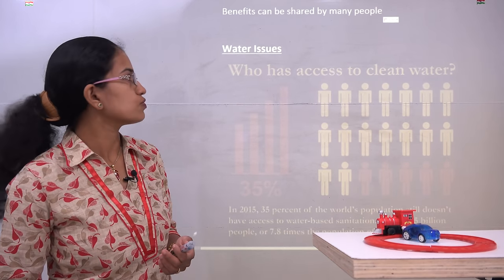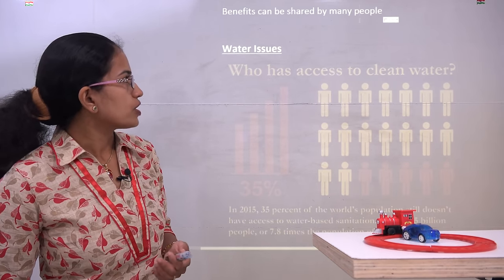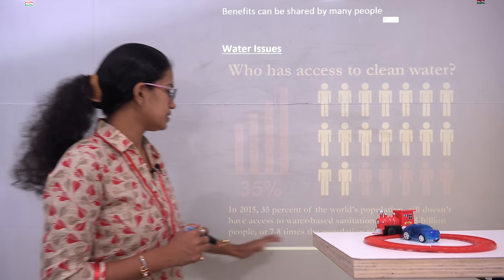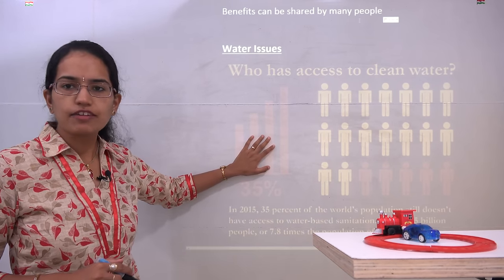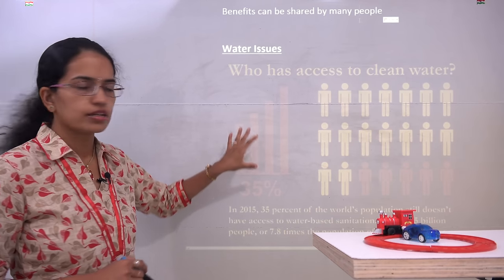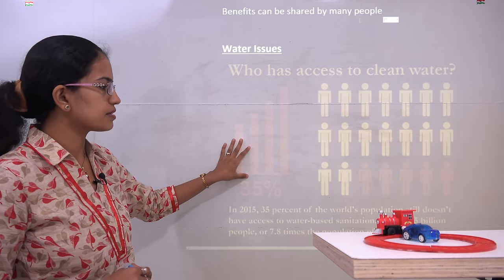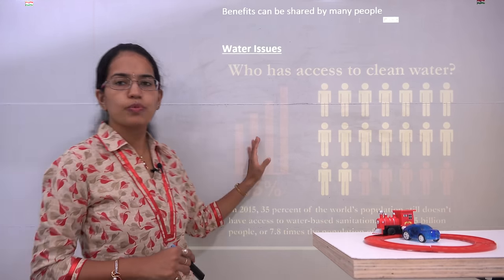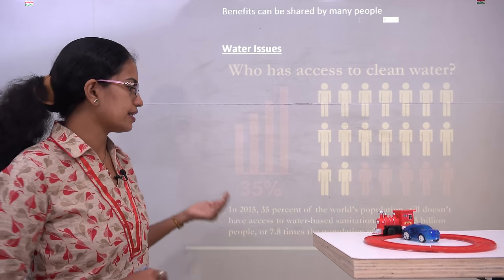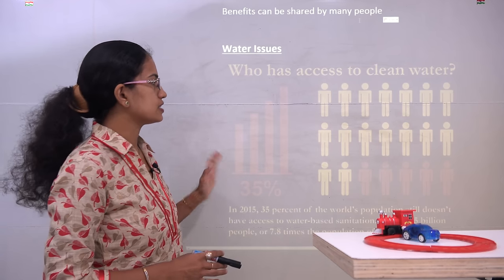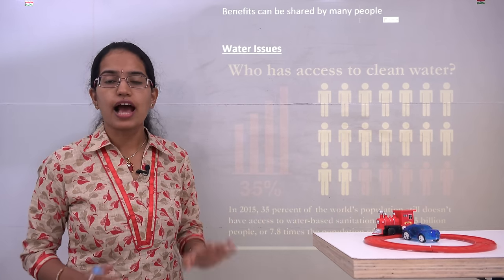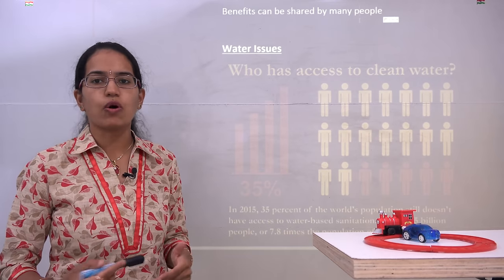Now let's talk about one of the major issues — water. When it comes to the global scenario, 35 percent of the world population still does not have access to water-based sanitation supply. That's around 2.5 billion people, or around 8 times the population of the United States. So that many people do not even have access to clean water.